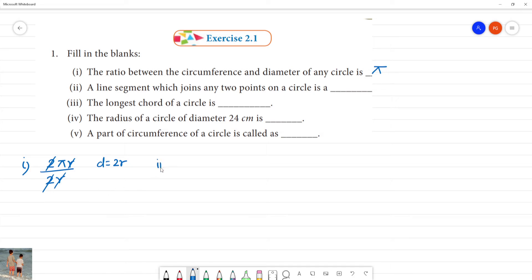Second one. A line segment which joins any two points on a circle. So one circle, in the circle, one line segment. This is A and B is a line segment. If a line segment joins any two points on a circle, then we call it as a chord.